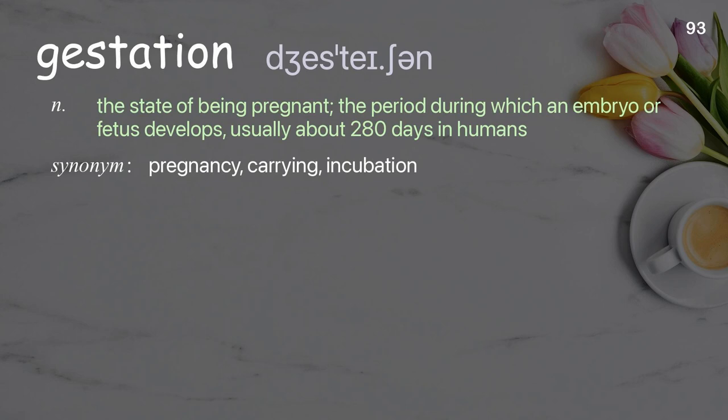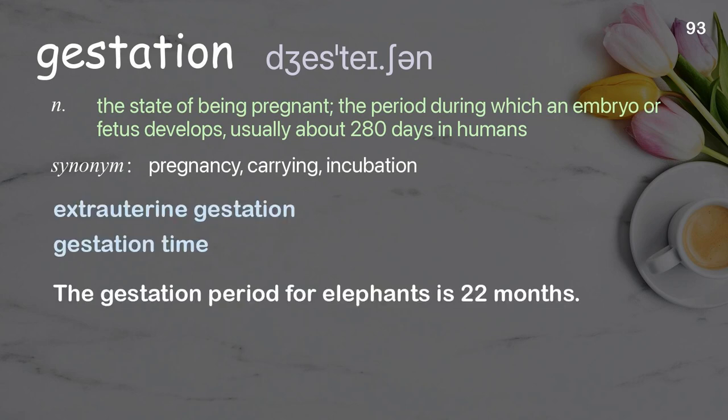Gestation: the state of being pregnant; the period during which an embryo or fetus develops, usually about 280 days in humans. Examples: extrauterine gestation, gestation time. The gestation period for elephants is 22 months.